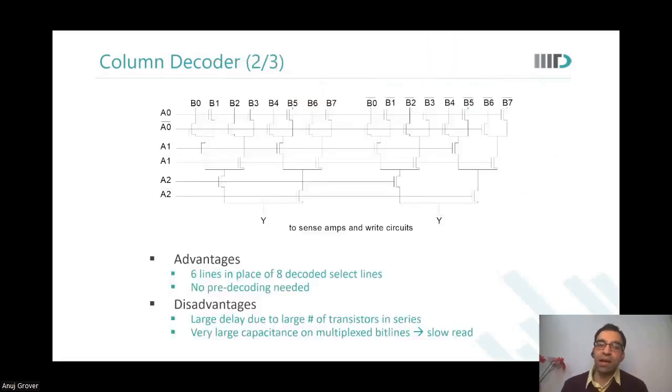Now, let's say I had Mux8. I do not want to use as many lines. I have area constraints. So I now want to use only six lines. So I save area, but what is the limitation here?